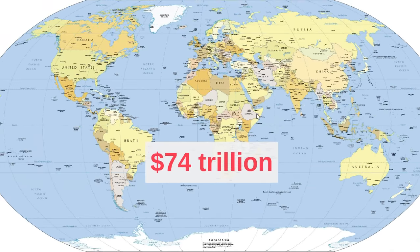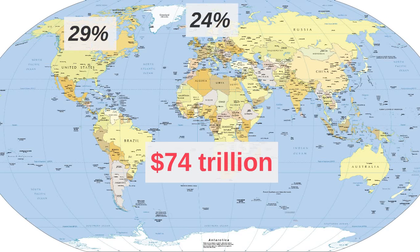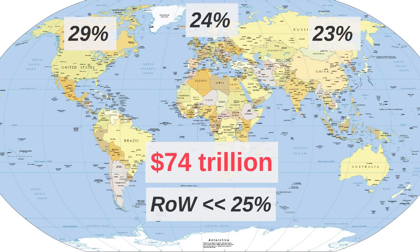Total global GDP is around $74 trillion per year, but global production is not equally distributed among the regions of the world. About 29% of total global output is concentrated in the North American region, about 24% in Western Europe, and about 23% in East Asia. That leaves much less than a quarter of global production in the rest of the world combined.